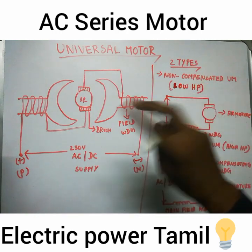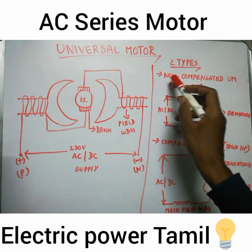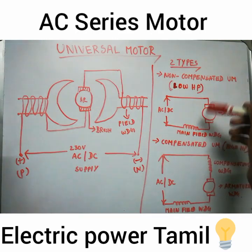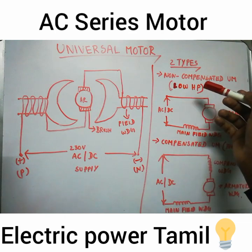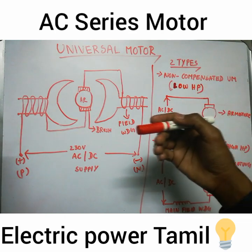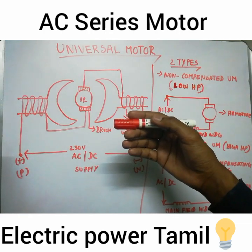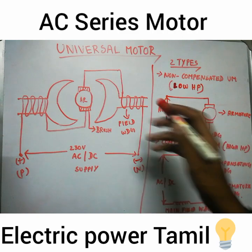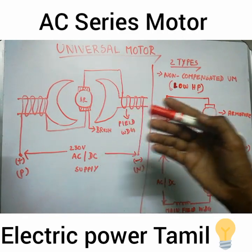There are two types of universal motor. One is a non-compensated universal motor and one is a compensated universal motor. The non-compensated universal motor is low HP — used in low horsepower applications. The compensated universal motor is for higher horsepower applications.